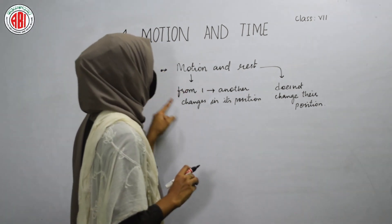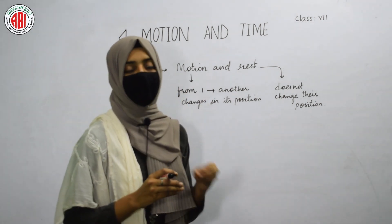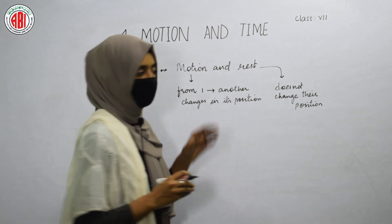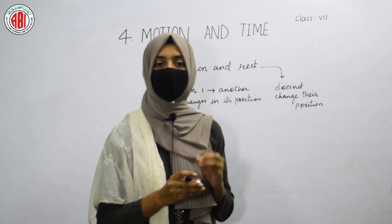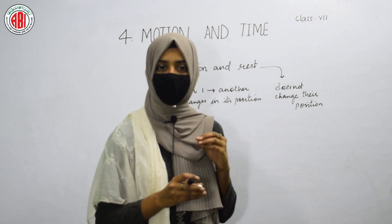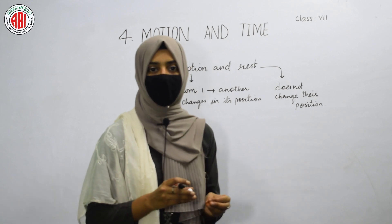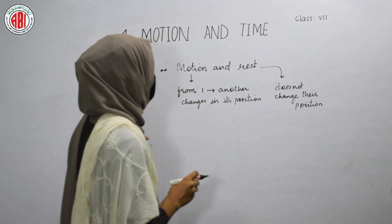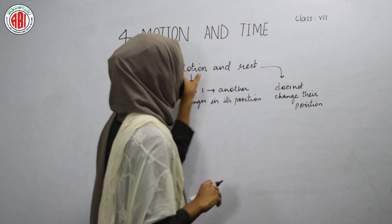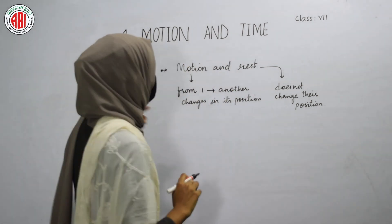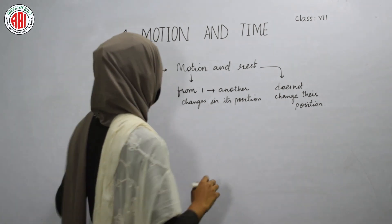An object is said to be in motion when it changes its position with respect to the surroundings in a given interval of time. An object is said to be at rest when it remains in its position without any change with respect to its surroundings in a given time. Let us take one example to understand the terms motion and rest more clearly.